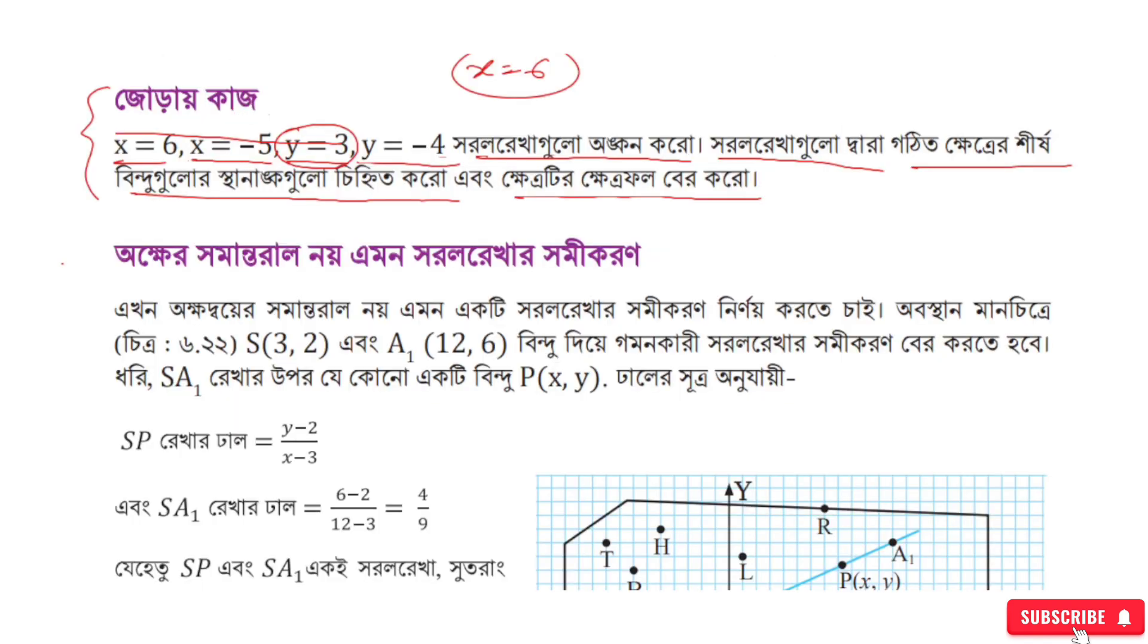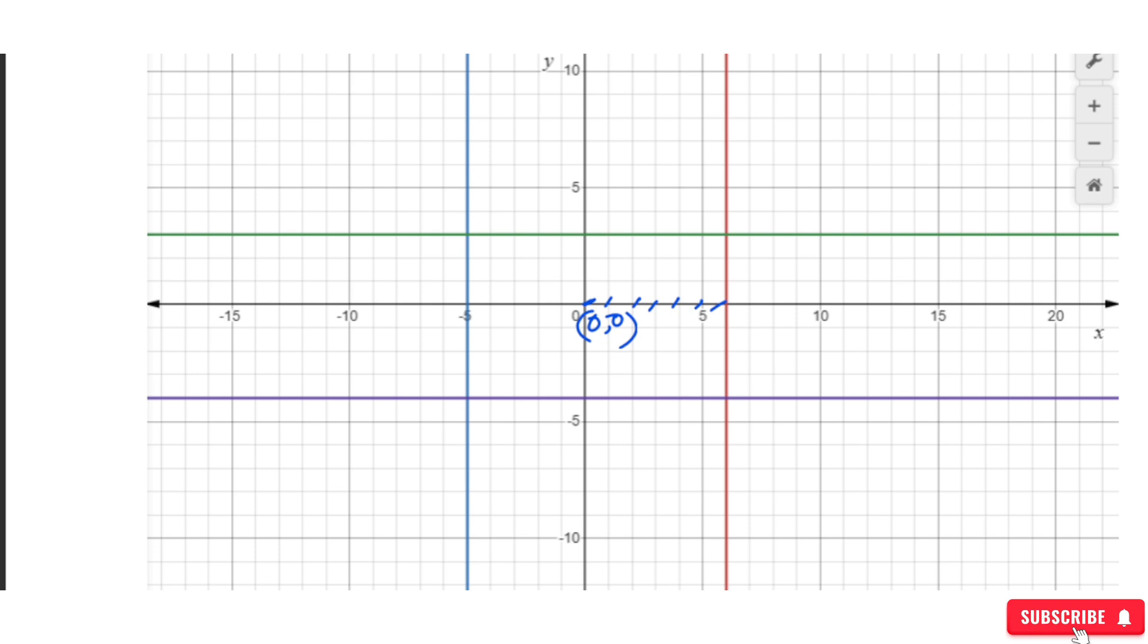Next, x equal to minus 5. This is a vertical line on the negative side. Now let's draw y equal to 3, which is a horizontal line.